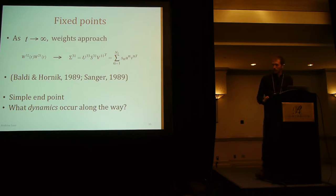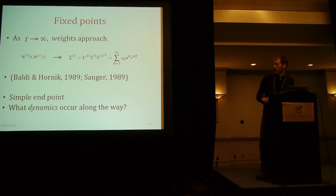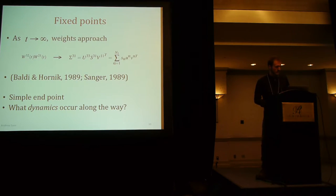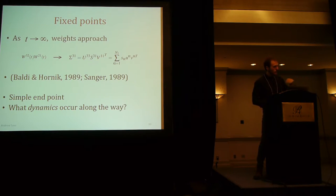What happens in this system? First, we can talk about what happens if you run the system to convergence — just run it forever. That's been known for a long time: the weights just converge to the input-output correlation matrix, which you can decompose with the SVD. So there's a simple endpoint, and we know where we're going, but how do we approach it?